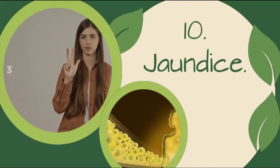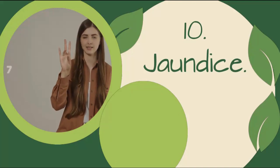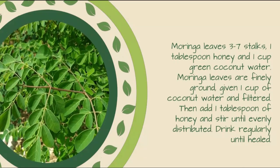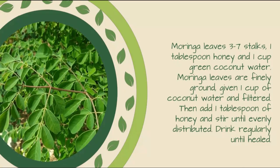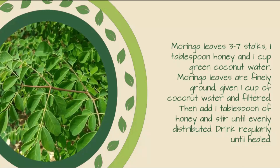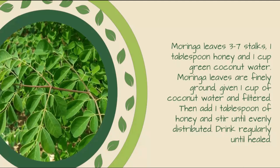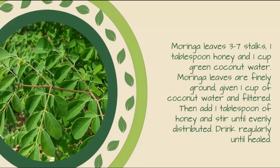10. Jaundice: Moringa leaves 3 to 7 stalks, 1 tablespoon honey and 1 cup green coconut water. Moringa leaves are finely ground, given 1 cup of coconut water and filtered. Then add 1 tablespoon of honey and stir until evenly distributed. Drink regularly until healed.